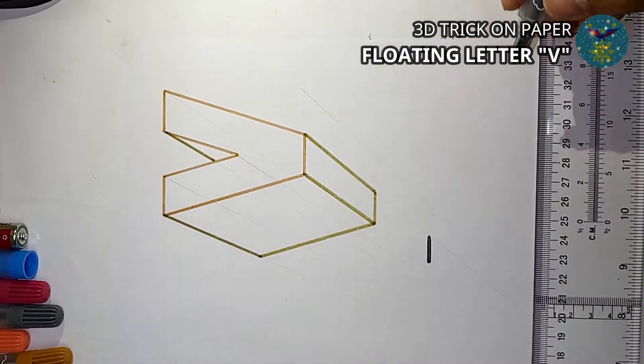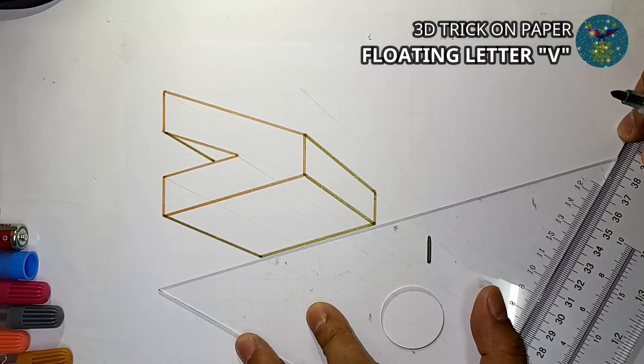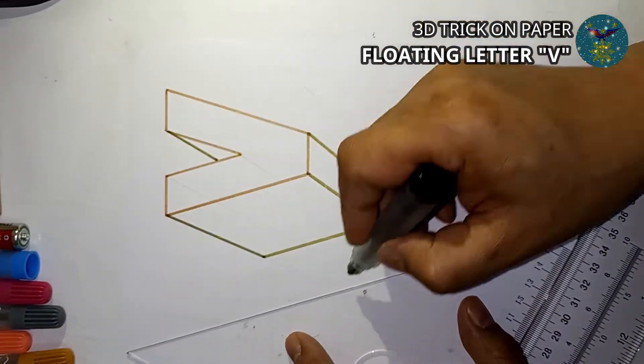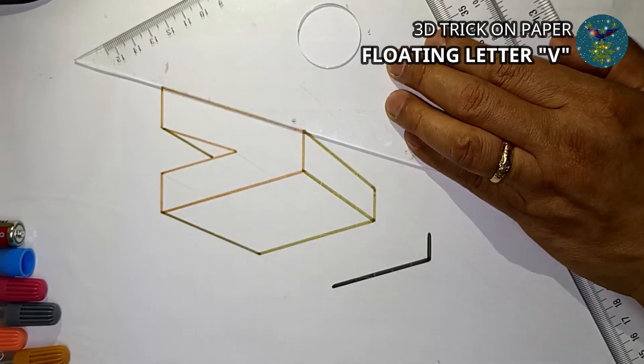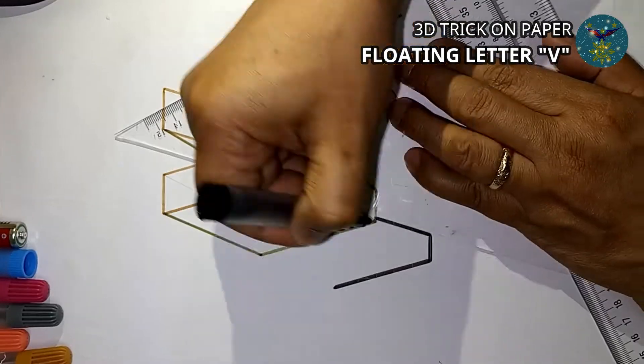Use the same color pen to draw the shadow of the object in perspective using drafting tools. After all outlines are complete, shade the shadow with color pen.